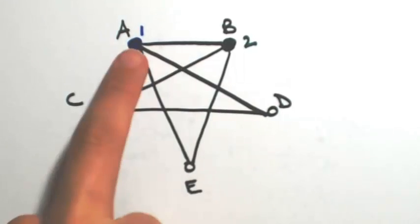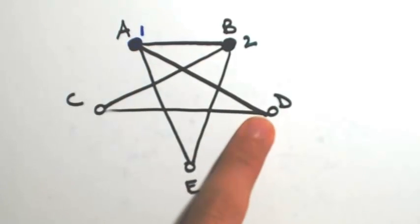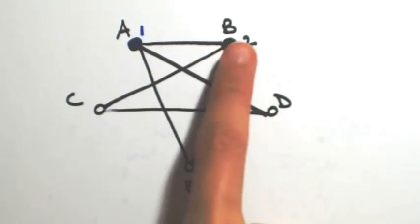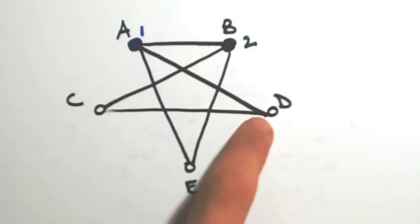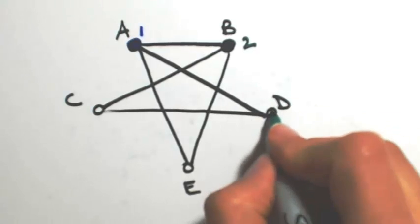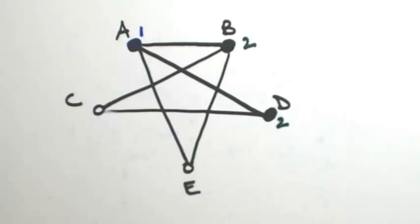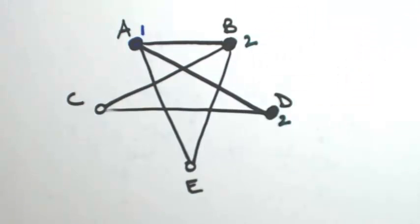A and D also need to be different colors. D is not a problem with B, so it's okay if I use two again. Because B and D can be in the same container.